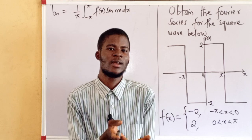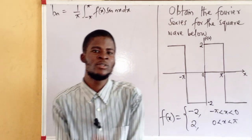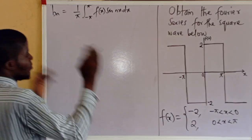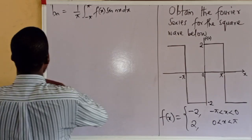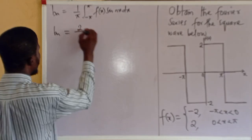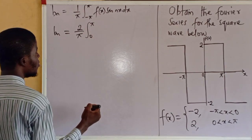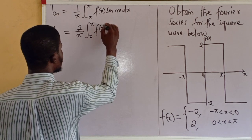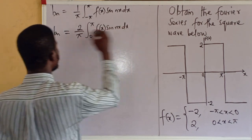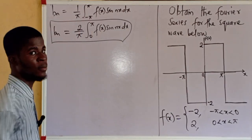We said in the previous video that odd function times odd function will produce an even function. For an even function that is symmetrical about the y-axis, the area of one side is the same as the area of the other side. So instead of taking the full range, we can take half of the range from 0 to pi and then double it. So for this function, b sub n will be 2 over pi times the integral from 0 to pi of f of x sine nx dx.